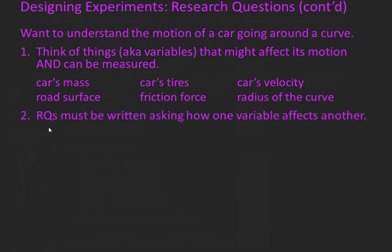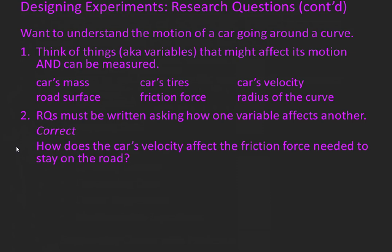Next, we want to write the research question asking how one variable affects another. For example, a correctly written RQ would say: how does the car's velocity affect the friction force needed to stay on the road? An incorrect way of writing that is: how fast can the car go? This is incorrect because it doesn't list specific variables such as velocity and friction force.